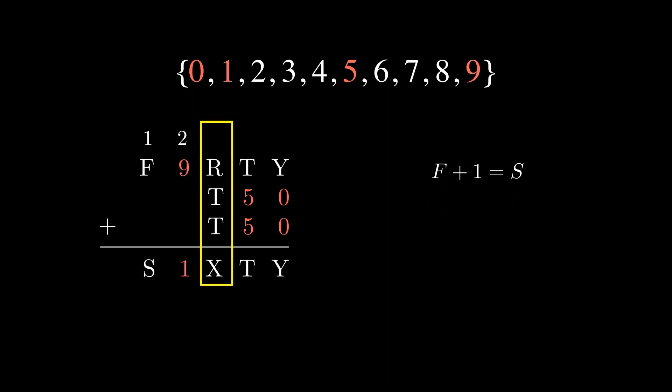Looking at the third column, we can derive the following equation. R plus 2T plus 1 is equal to 20 plus X. Since no value of T will make a carry of 2, we know the carry from the previous column is exactly 1. We also know that the carry from this column is exactly 2, which gives us the 20 on the right-hand side. Since R plus 1 can be at most 9, for the left-hand side to be greater than 20, T has to be greater than or equal to 6.